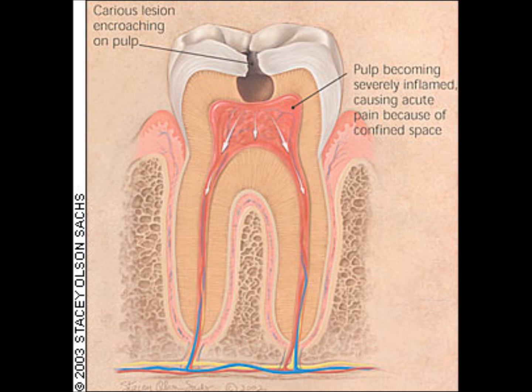Sub-acute pulpitis is a clinical condition that stands between acuteness and chronicity. The pain is mild to moderate. These cases may become acute or chronic at any time, and the treatment is root canal therapy as well.